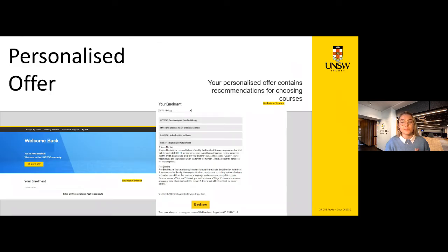The first step in the enrolment process at UNSW is through the personalised offer. Students newly commencing at UNSW will have received a personalised offer, so each of you should have seen this already. If you haven't, I recommend going back into your emails or contacting the UNSW Nucleus, who are the first point of contact for all enrolment and programme questions, and they can resend it to you.